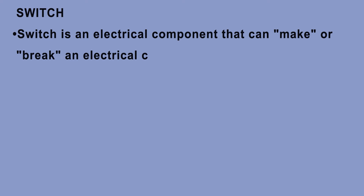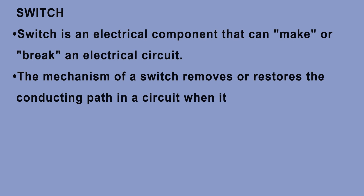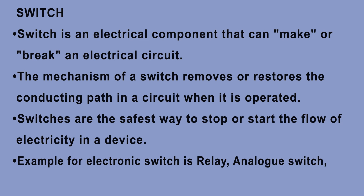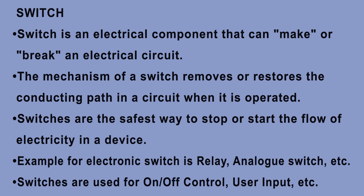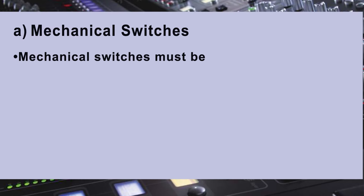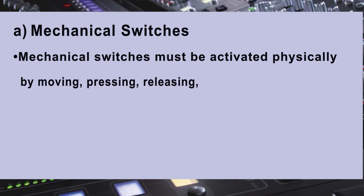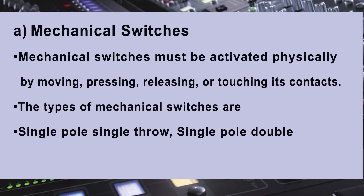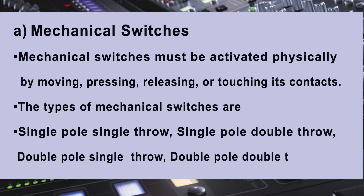Switch. A switch is an electrical component that can make or break an electrical circuit. The mechanism of a switch removes or restores the conducting path in a circuit when operated. Switches are the safest way to stop or start the flow of electricity in a device. Examples of electronic switches include relay, analog switch, etc. Switches are used for on/off control, user input, etc. Mechanical switches must be activated physically by moving, pressing, releasing, or touching their contacts. The types of mechanical switches are single pole single throw, single pole double throw, double pole single throw, double pole double throw, etc.